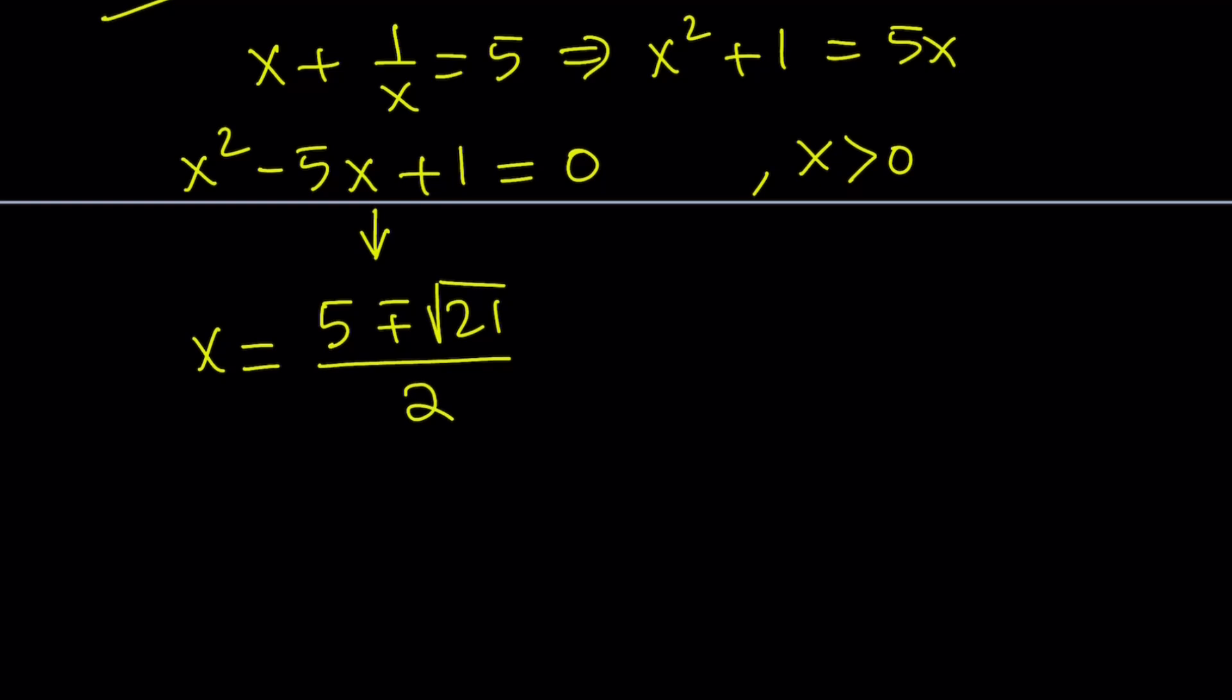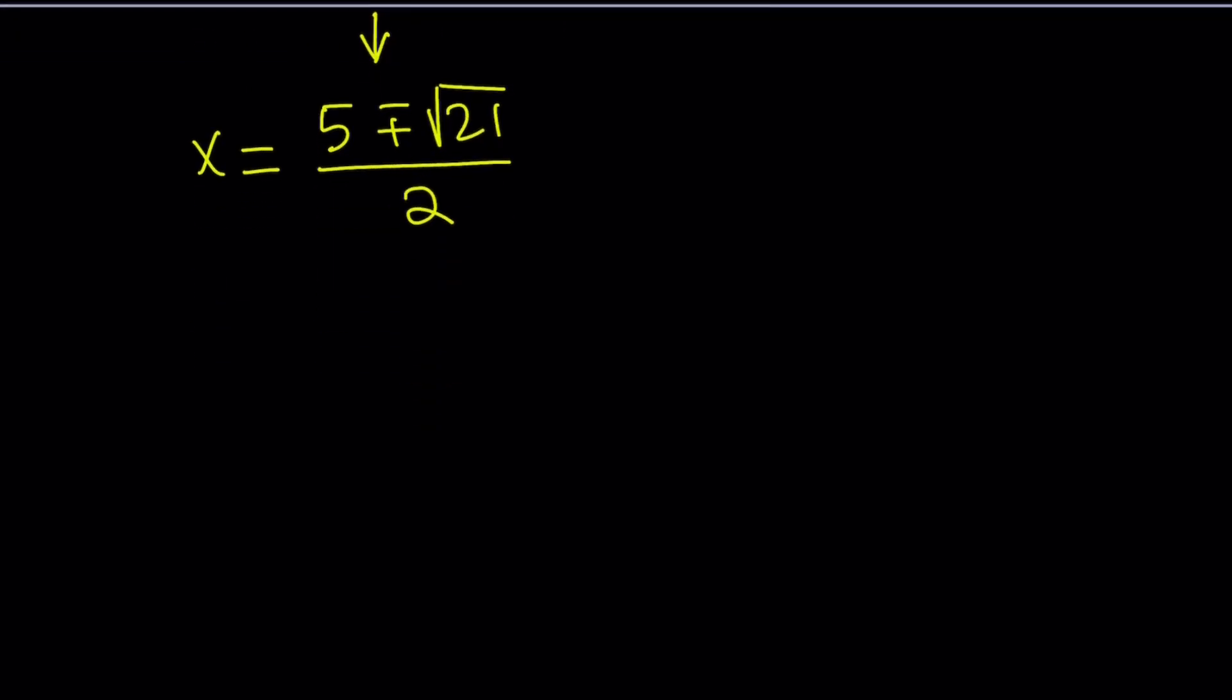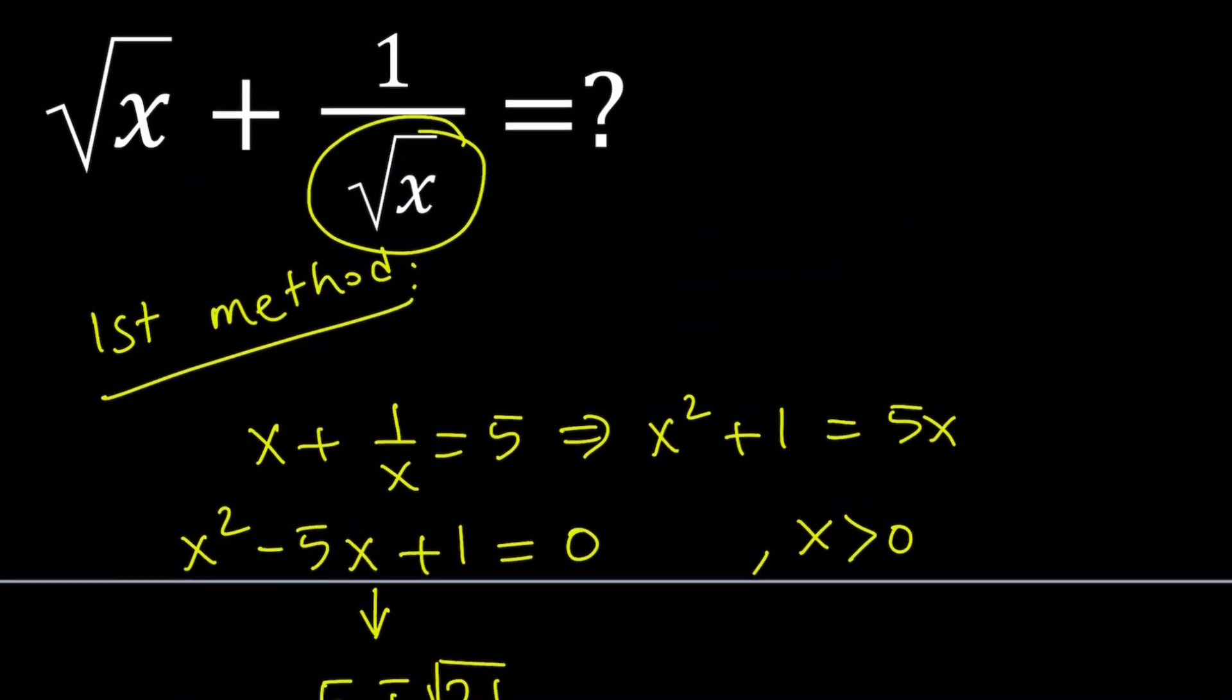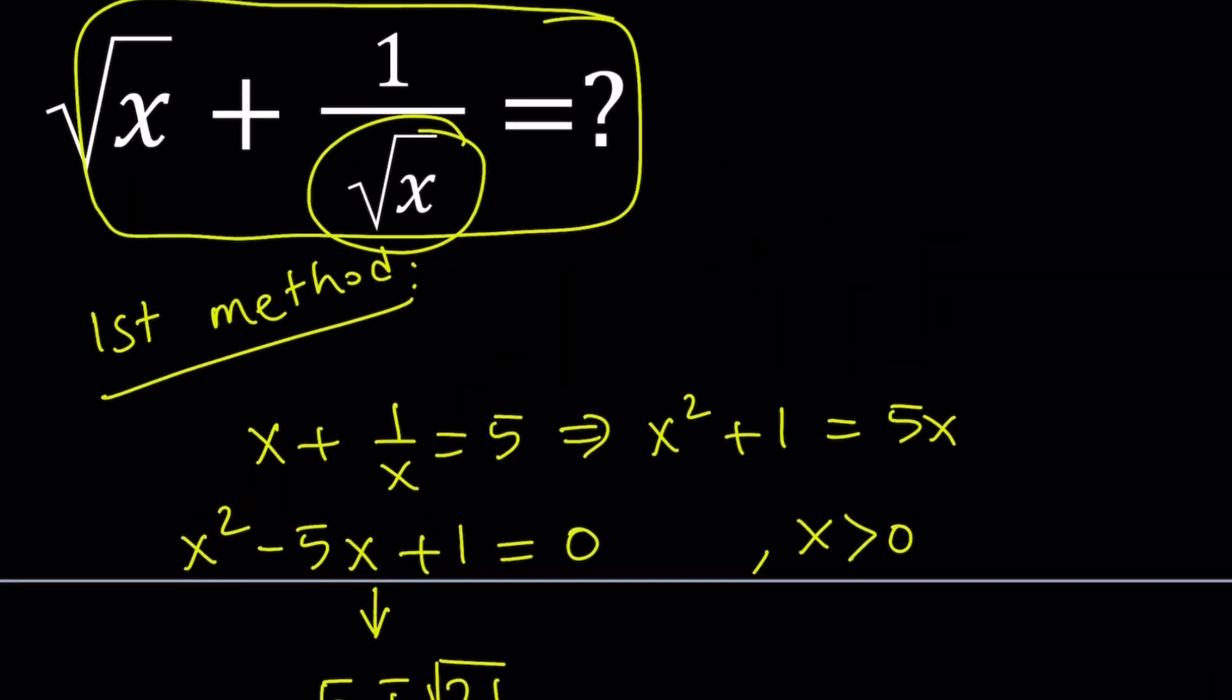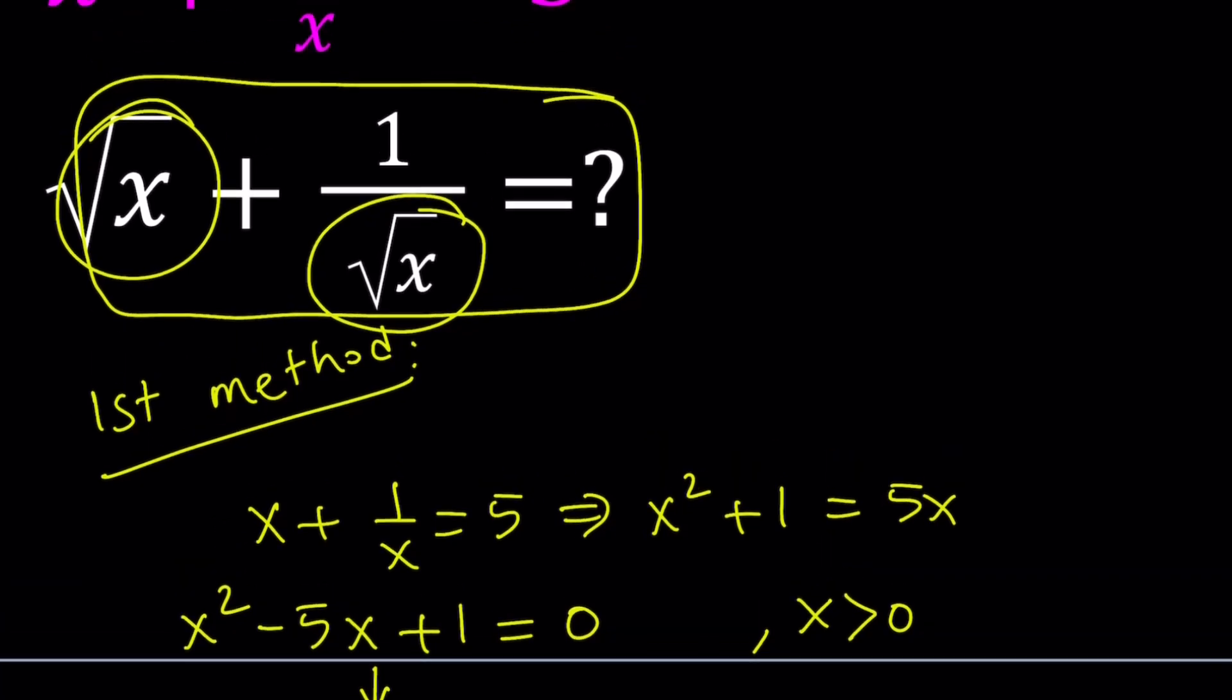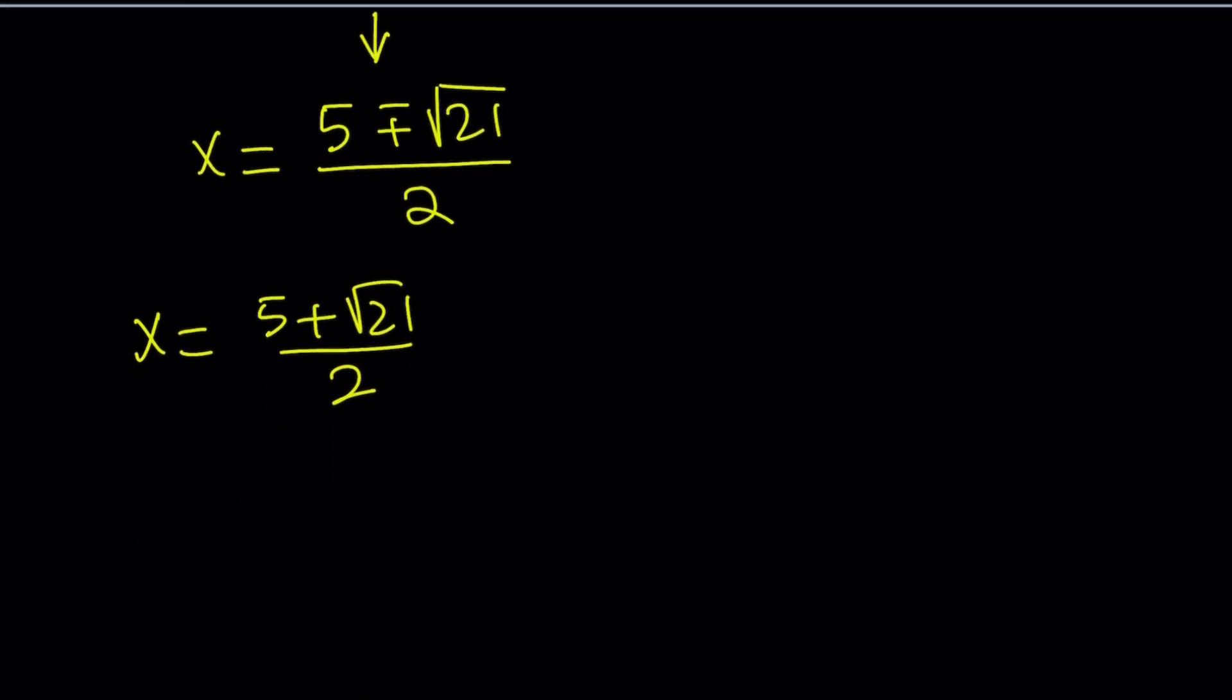So we get two solutions. That's what I meant by 1a and 1b. Let's go ahead and use the positive one first. What happens if x equals 5 plus square root of 21 divided by 2? Now, remember, in order to evaluate this expression, I do need square root of x plus 1 over square root of x. So let's find square root of x first, and then we're just going to take the reciprocal. Square root both sides.